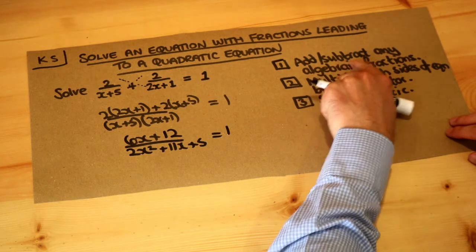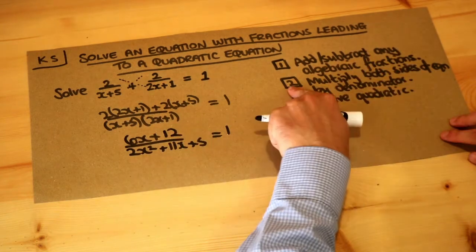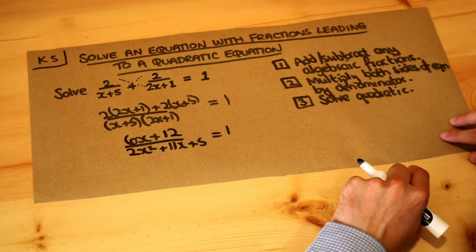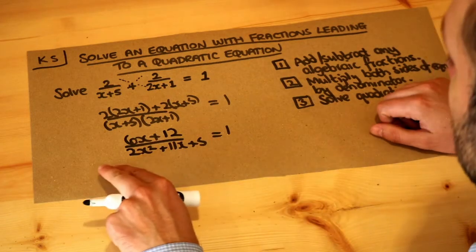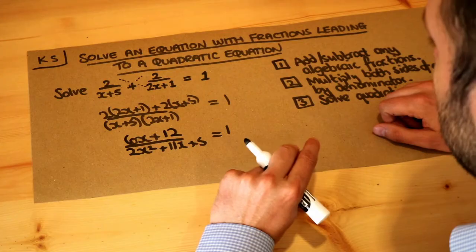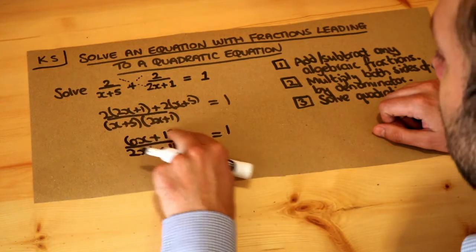So we've done step one: we've added any algebraic fractions. Next, we should multiply both sides of the equation by the denominator. The motivation here is that we don't like fractions in equations.